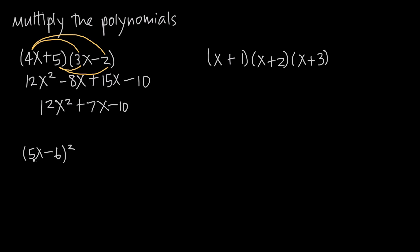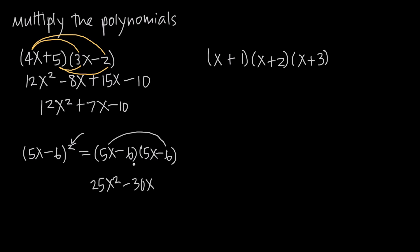Now you might also see an example like this where you have the quantity 5x minus 6, which is a binomial, and this quantity is squared. Squaring a binomial is the same as multiplying two of these together: 5x minus 6 times 5x minus 6. Using FOIL: 5x times 5x gives us 25x squared. 5x times negative 6 gives us negative 30x. Negative 6 times 5x gives us negative 30x. And negative 6 times negative 6 gives us positive 36 because a negative times a negative is a positive. Combining like terms, we get 25x squared minus 60x plus 36.